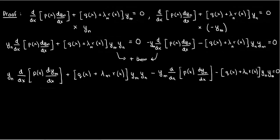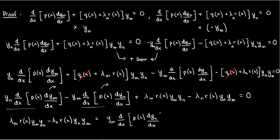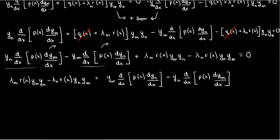The q(x) terms just subtract out and go away, which leaves us with a simpler expression. We can shift the derivative terms to the right-hand side to get lambda_n times r(x) times y_m times y_n, minus lambda_m times r(x) times y_n times y_m, equals y_n times the derivative of p(x) dy_m/dx, minus y_m times the derivative of p(x) dy_n/dx. Then we can factor r(x) times y_m times y_n from the left-hand side.